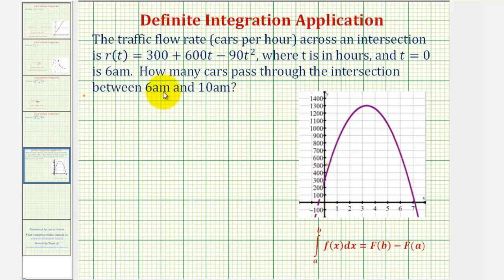And since t equals zero represents 6 a.m., we're concerned about determining the total number of cars from t equals zero to t equals four.